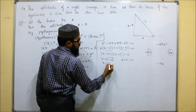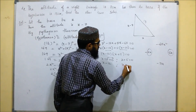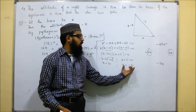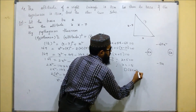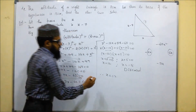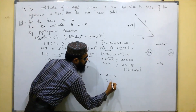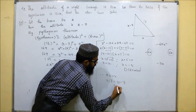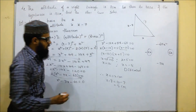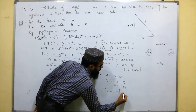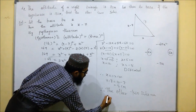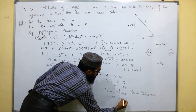This gives x minus 12 equals 0 or x plus 5 equals 0, so x equals 12 or x equals minus 5. Since a measurement cannot be negative, we discard x equals minus 5. Therefore x equals 12 centimeters. The altitude is x minus 7, which is 12 minus 7 equals 5 centimeters. Therefore the other two sides are 12 centimeters and 5 centimeters.